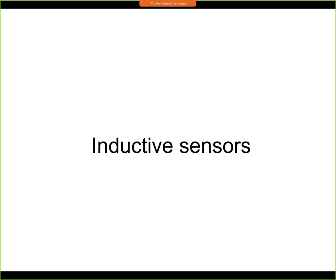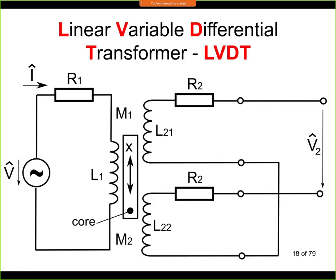Now let's look at the second group — the inductive sensor, which uses inductivity change as a function of position. The one example shown today is called an LVDT, which stands for Linear Variable Differential Transformer. We will see another example of an inductive sensor in the following lectures.